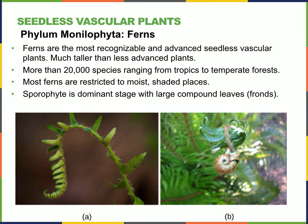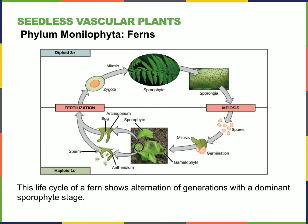Ferns can be much taller than non-vascular plants, and there are lots of fern species. For a time they were the dominant plant and are found in most environments on Earth, but they still require a wet area. Here, a developing frond is shown — a compound leaf that unrolls from the fiddlehead. Ferns have a dominant sporophyte; the sporophyte produces spores through meiosis, and these spores develop into a gametophyte on a wet surface. Fertilization occurs at the gametophyte stage, requiring water coverage for sperm to swim, and then the fertilized egg produces the sporophyte again.